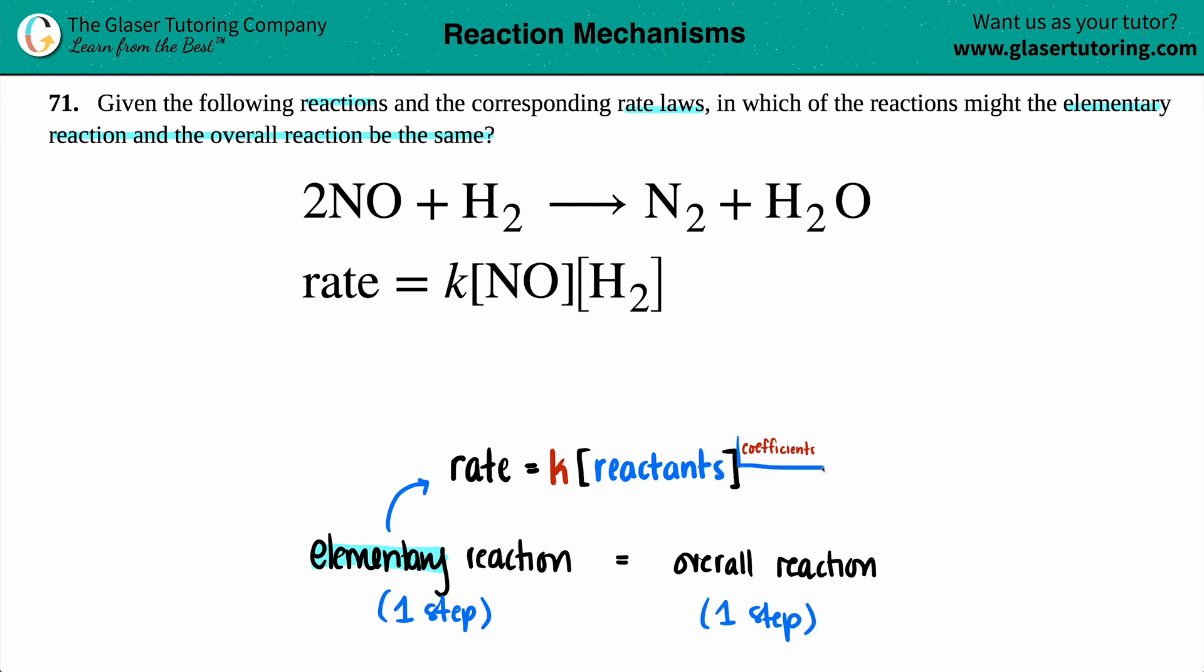Generally, we see this as orders, if it's an overall reaction of two or three or four steps. But if you're just talking about a single step, now we are allowed to look at those coefficients. And that's where we're going to be analyzing the reaction with the rate law. If it matches with the coefficients, that's an elementary reaction, and that's the overall reaction.